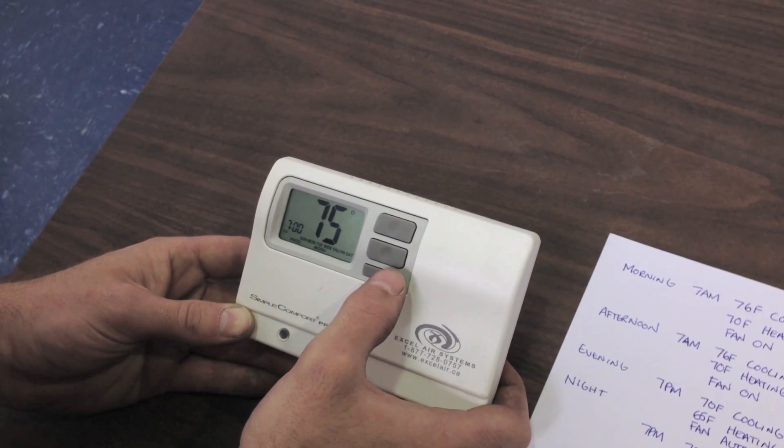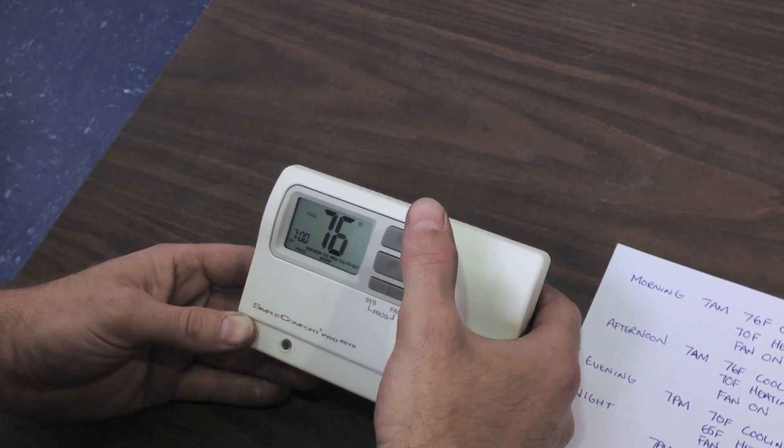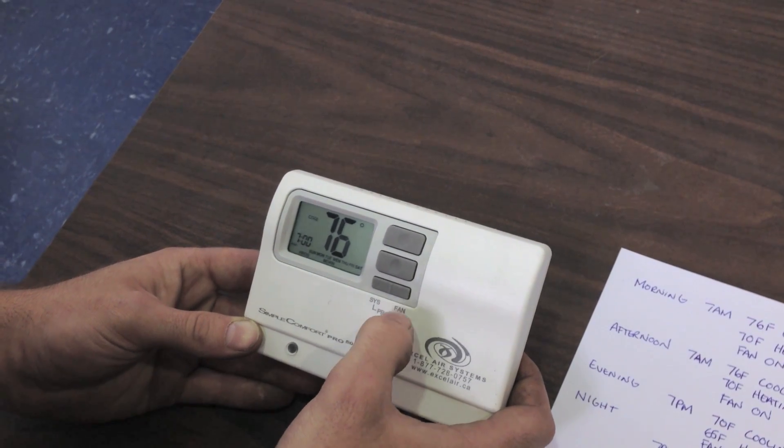Now our cool is displaying. And we set our cooling for 76. So we need to push our up arrow to 76. When you're happy with your set temperature, press fan.